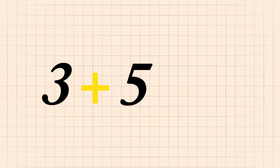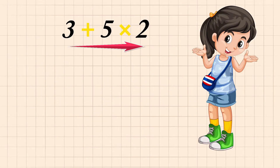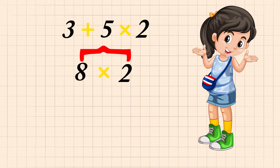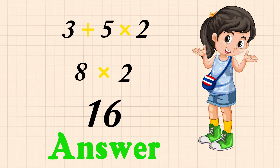The problem is 3 plus 5 multiplied by 2. As the problem is written from left to right, let's just solve it as it is written. So 3 plus 5 gives us 8, and 8 multiplied by 2 gives us 16. So the answer is 16.